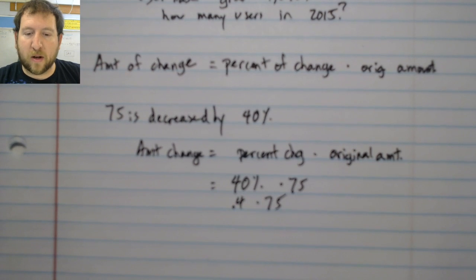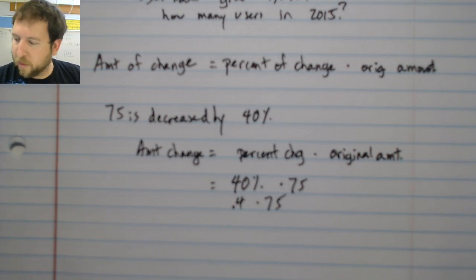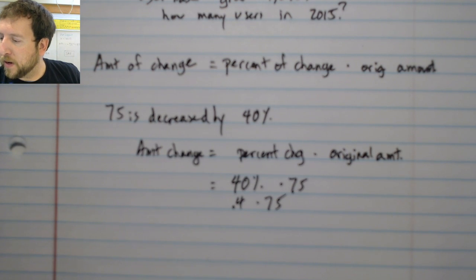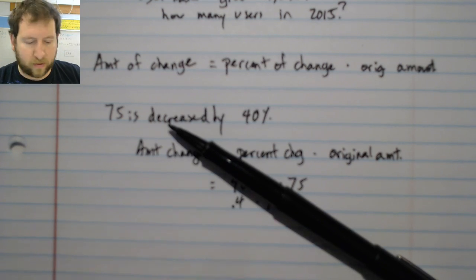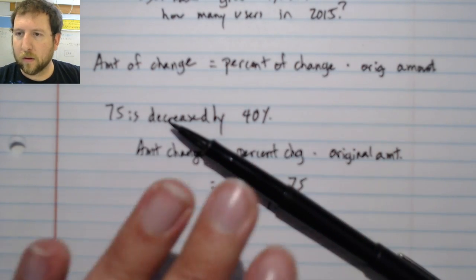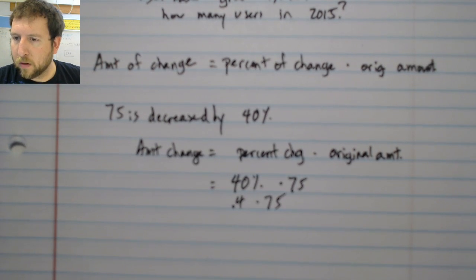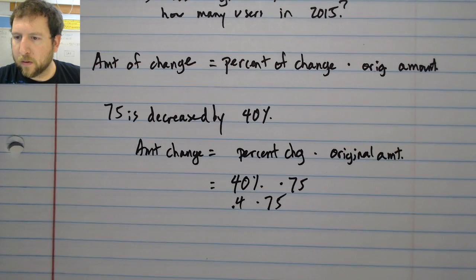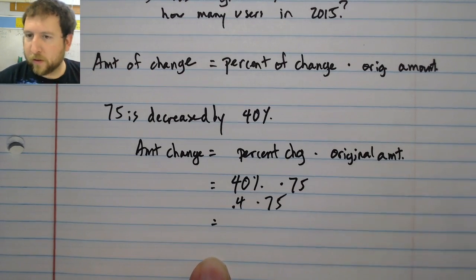I'm going to put that in my calculator. I have 0.4 times 75. I don't know why my focus is not doing super great today. Let me see if I can fix that real quick. There we go.